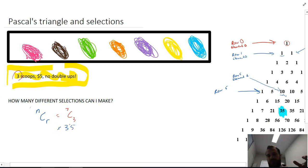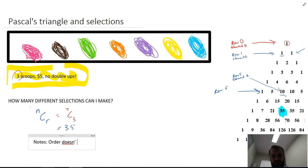At this particular ice cream shop with seven different flavors, and you can choose three scoops with no double ups, you can have 35 different combinations of ice cream cone. So some things to note here. Order doesn't matter. Selections, it doesn't matter whether I go strawberry, chocolate, lime, or lime, chocolate, strawberry on my ice cream cone. That's considered the same choice. Order doesn't matter.